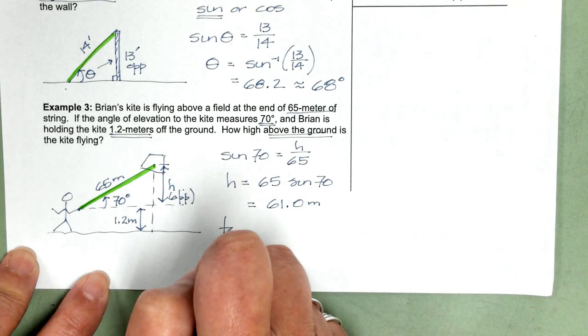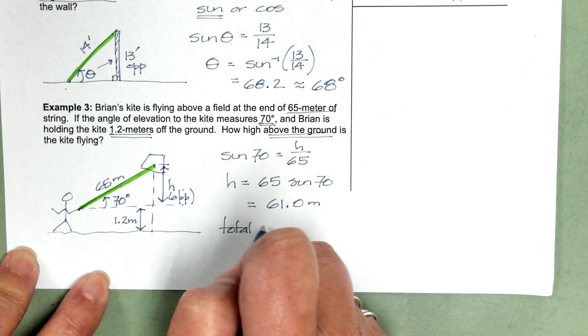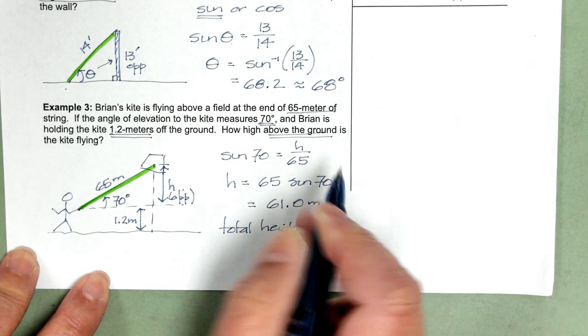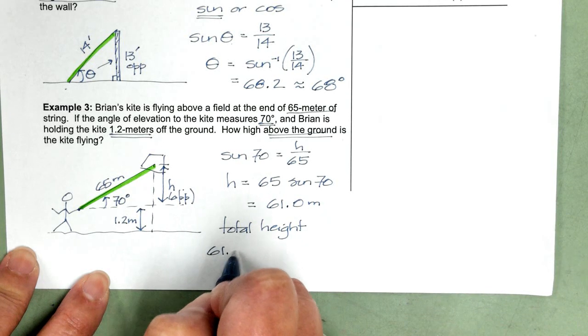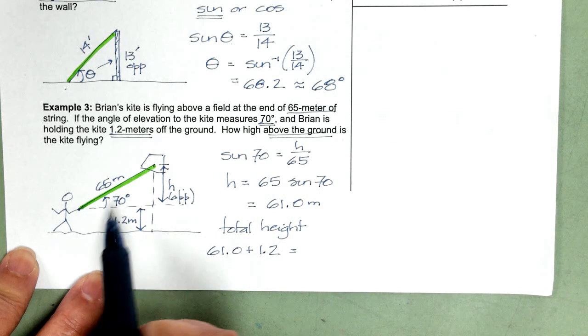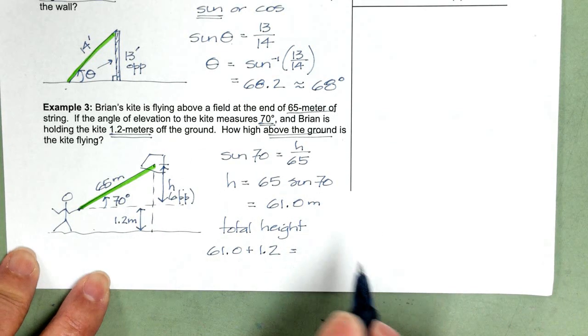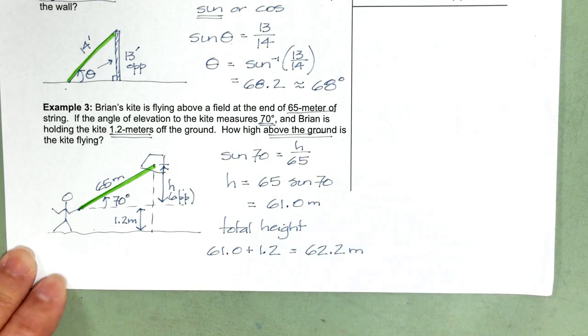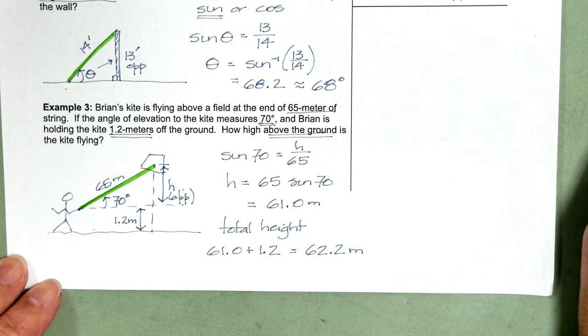So the total height of the kite is going to be those 61 meters plus the 1.2 meters that Brian's already holding it above the ground, meaning the kite is 62.2 meters above the ground.